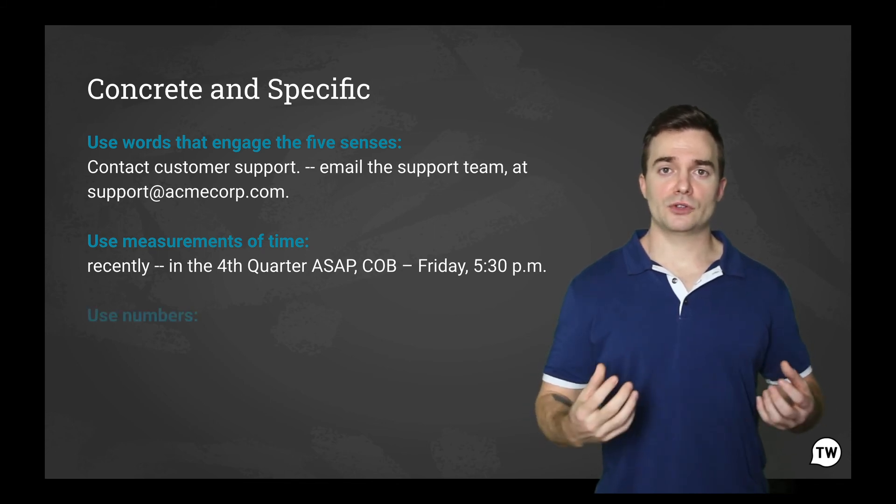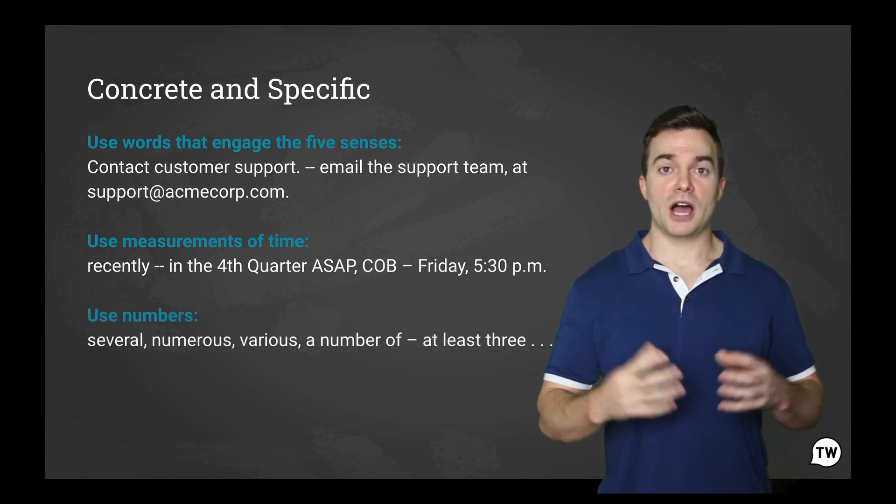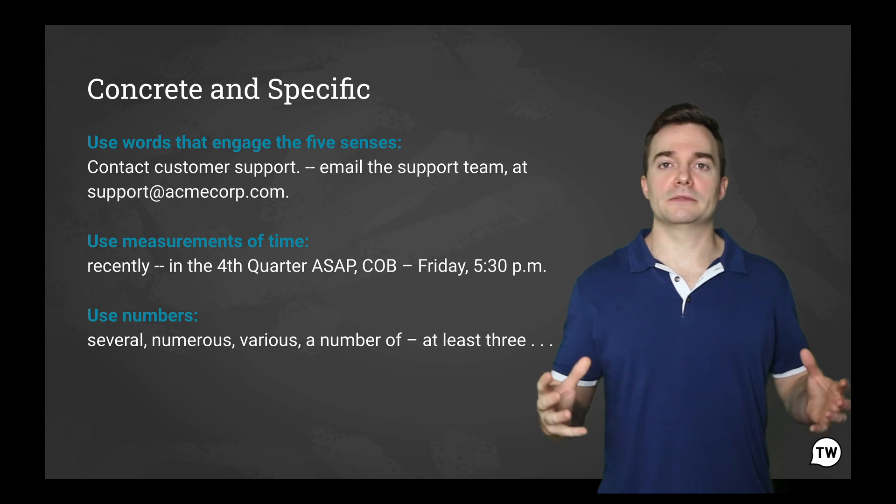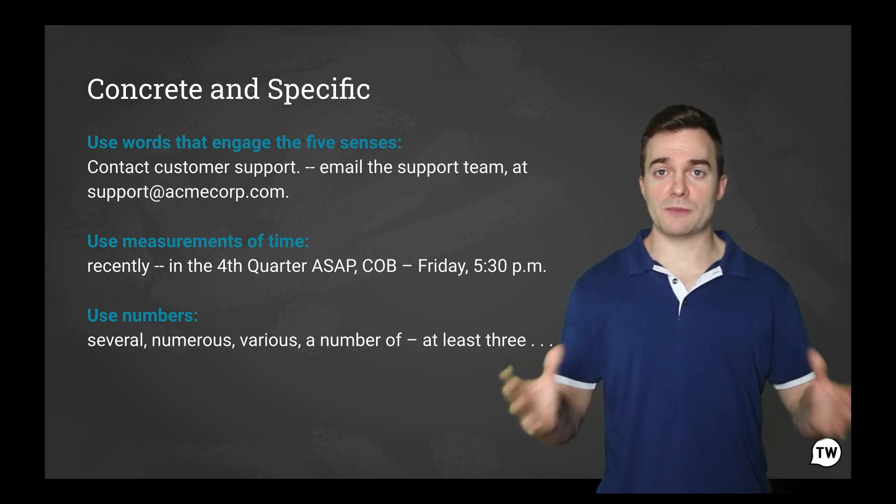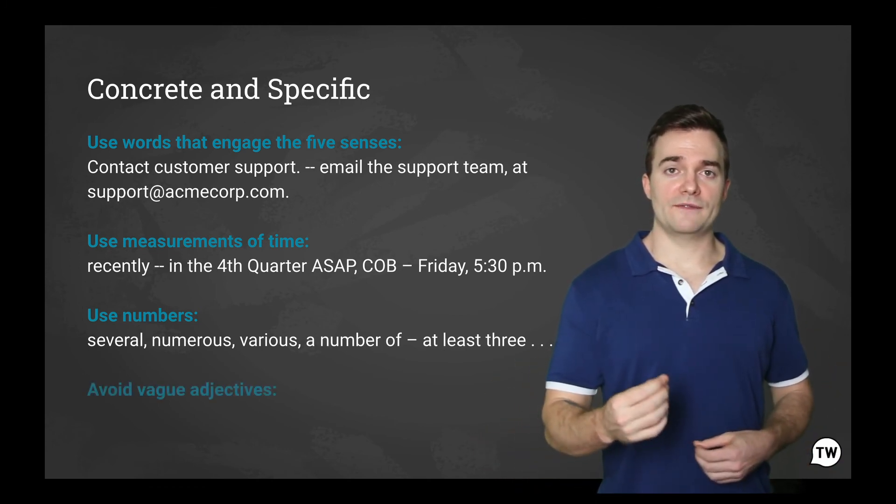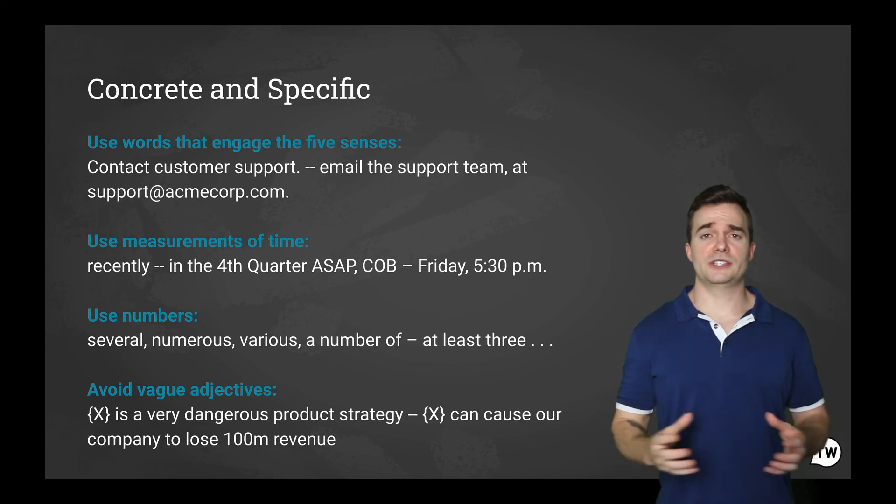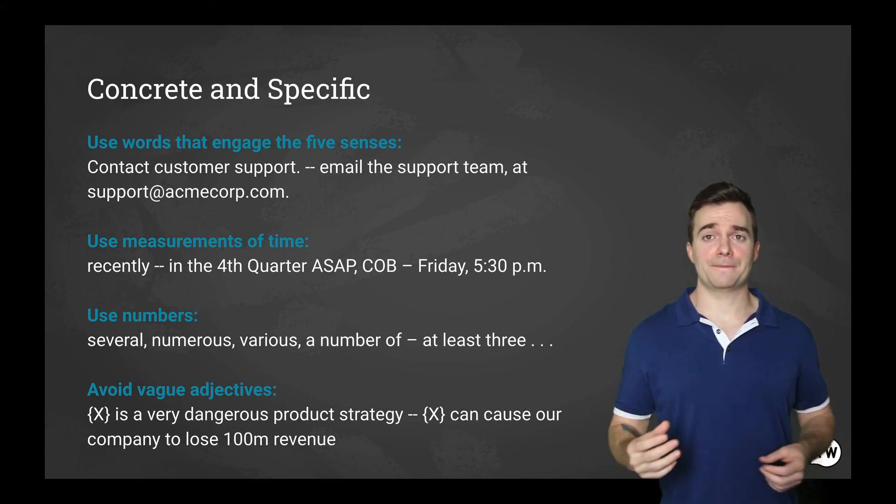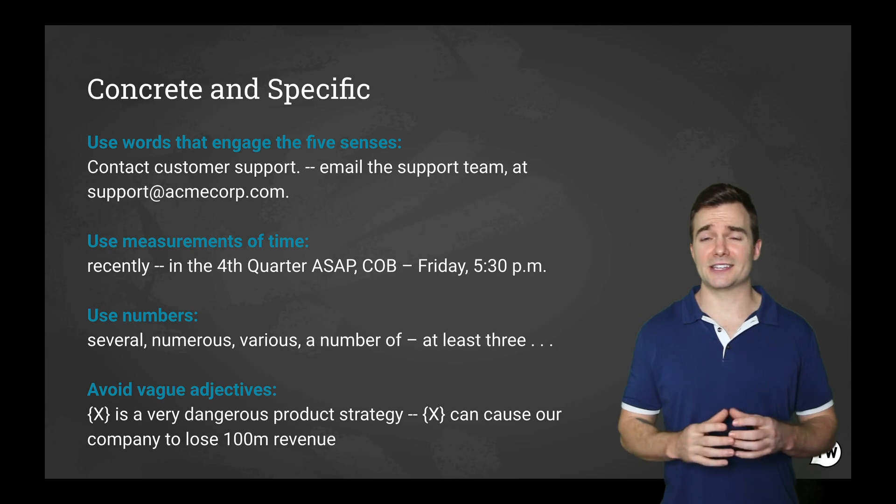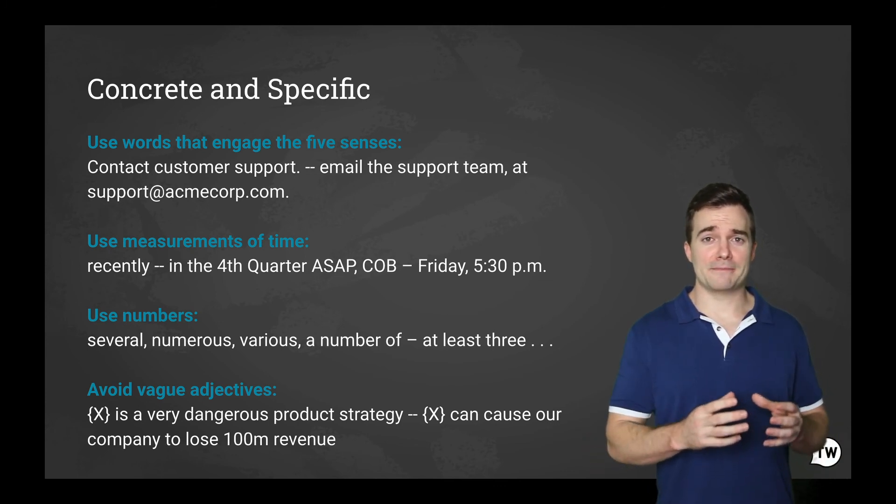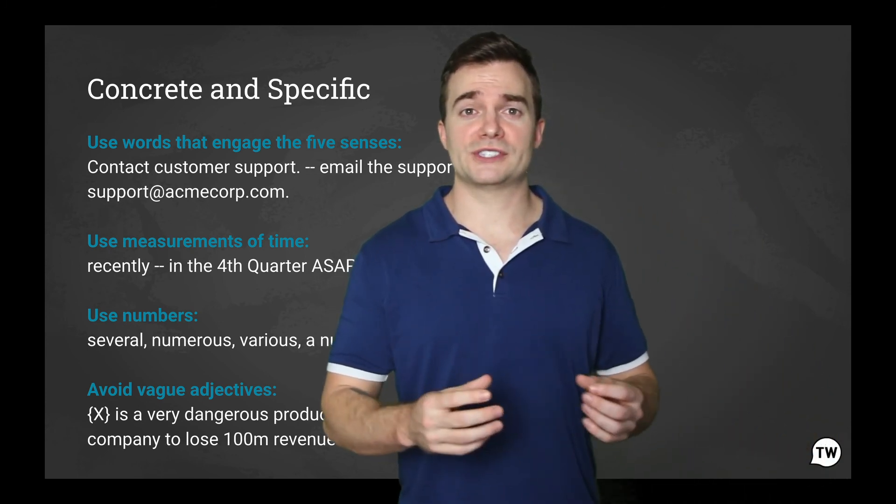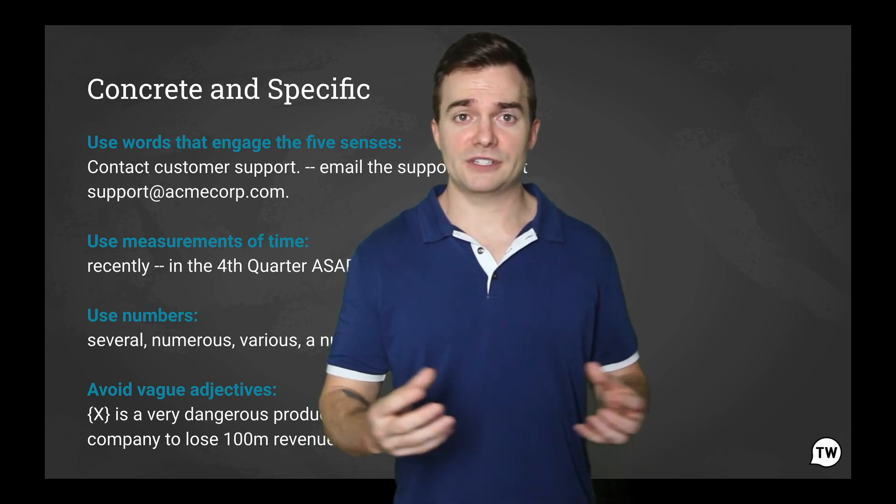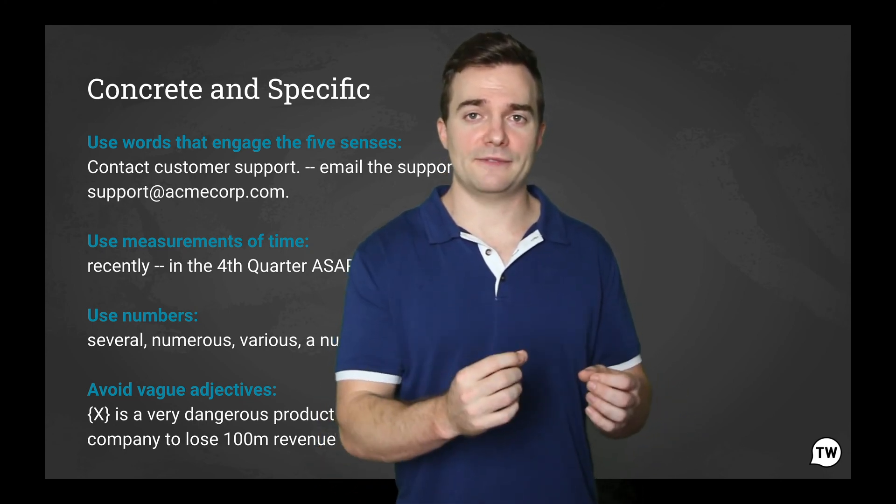And use numbers. Several, numerous, various, a number of. Those are all very vague. Say at least three or just be more specific. Avoid vague adjectives. X is a very dangerous product strategy. Now let's make that more specific. X can cause our company to lose a hundred million in revenue.